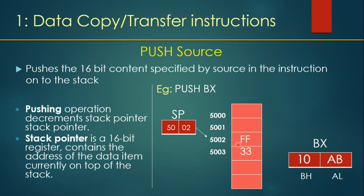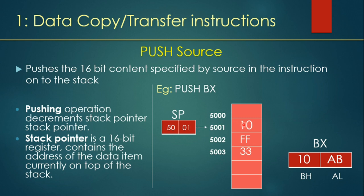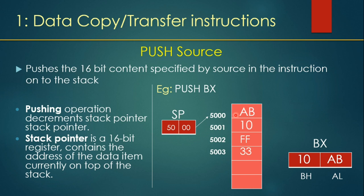The stack pointer is a register that points to the address of the data at the top of the stack. Right now FF is the topmost data and its address is 5002, so that is what is stored in the stack pointer. After the PUSH is executed, the stack memory is decremented by two — the higher byte goes first, then the lower byte, each time decrementing the stack pointer by one. The stack pointer value becomes 5000, down from 5002, because 16-bit data takes two places in stack memory.